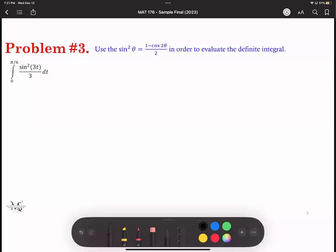All right, so we're going to use our half angle identity, sine squared theta equals one minus cosine theta over two, to evaluate this integral.